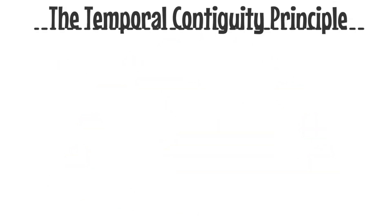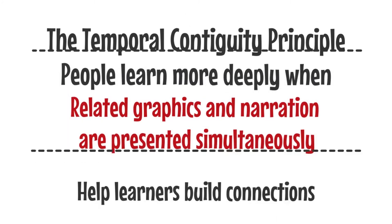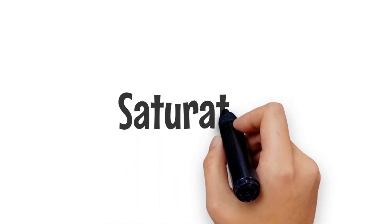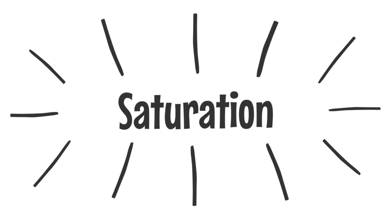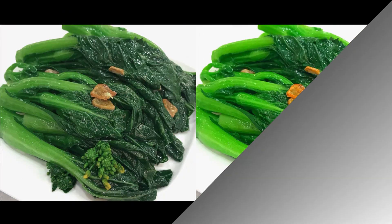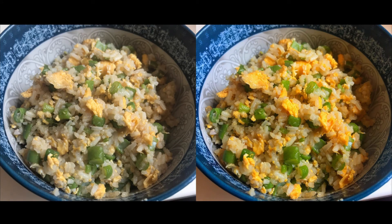Finally, the temporal contiguity principle: people learn more deeply when the corresponding graphics and narration are presented simultaneously rather than successively, because it helps learners build connections between corresponding words and graphics. For example, when we are teaching students how to change saturation to make a food photo look better — as long as we adjust the saturation to a higher point, the meat will look more juicy, the vegetables will look more fresh, and even the main dish, fried rice, will look much better.